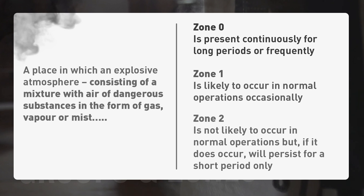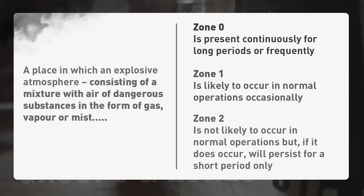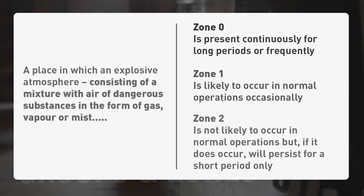Whether the areas are classed as zone 0, 1 or 2 depends on the likelihood that the explosive environment will occur and, if it does occur, the frequency of its occurrence. For example, in the case of zone 2, it is considered unlikely that the explosive environment would occur in normal operation, and if it did, it would only be for a short period.